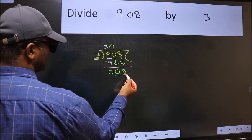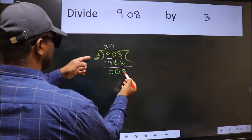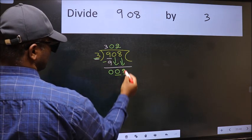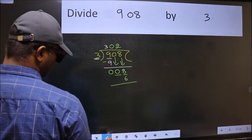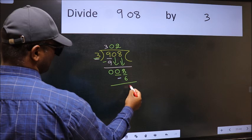Now a number close to 8 in the 3 table is 3 times 2, which is 6. Now we should subtract. We get 2.